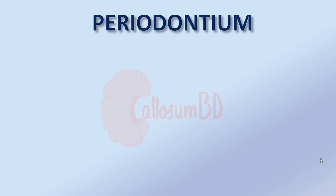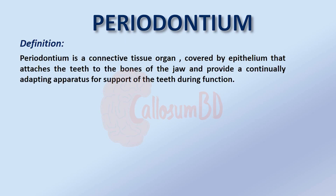The Periodontal Ligament is a connective tissue organ covered by epithelium that attaches the teeth to the bones of the jaw, and provides a continually adapting apparatus for support of the teeth during function.